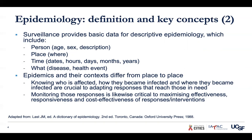Epidemics and their context differ from place to place. Knowing who's infected, how they became infected, and where they became infected are crucial for us to target public health interventions. And once we start targeting them and trying to intervene to prevent disease or to get people into treatment, we need to monitor what we're doing to maximize its effectiveness, responsiveness, and cost-effectiveness.